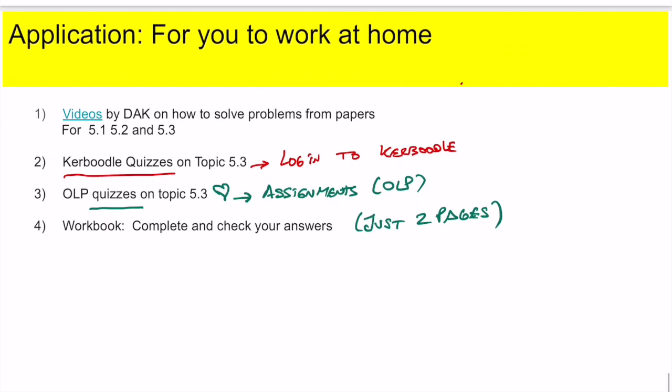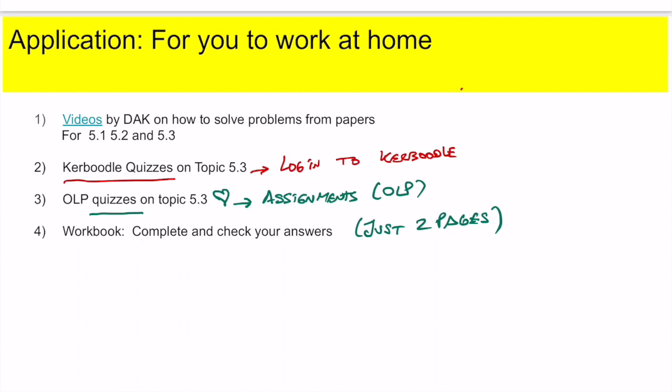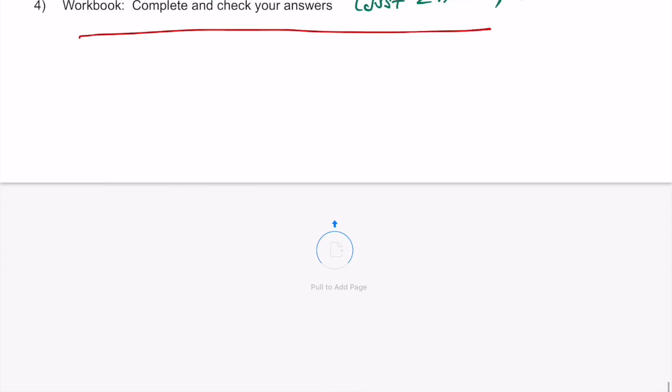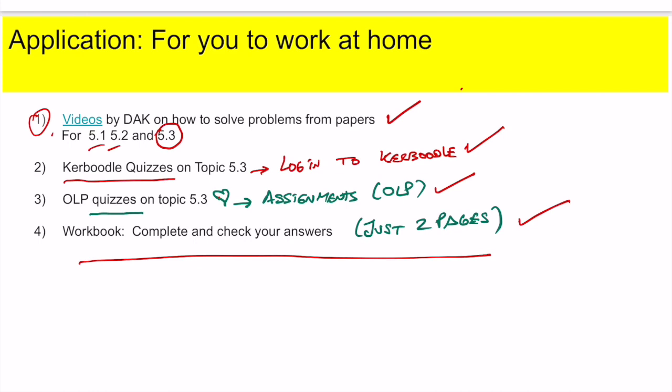This is lesson two, and these are the assignments you have to do at home at your own pace. First, watch David Kahn's videos on how to solve problems from the IB for topics 5.1, 5.2, and 5.3. The link is in the slides I shared. Then I added some quizzes in Kerboodle, so log in and solve those. Next, OLP quizzes - go to assignments and you'll find 5.3 quizzes. Finally, just two pages to complete on the workbook about 5.3. These are your homework, and we'll get together with questions you might have from these four tasks. Have a good day.